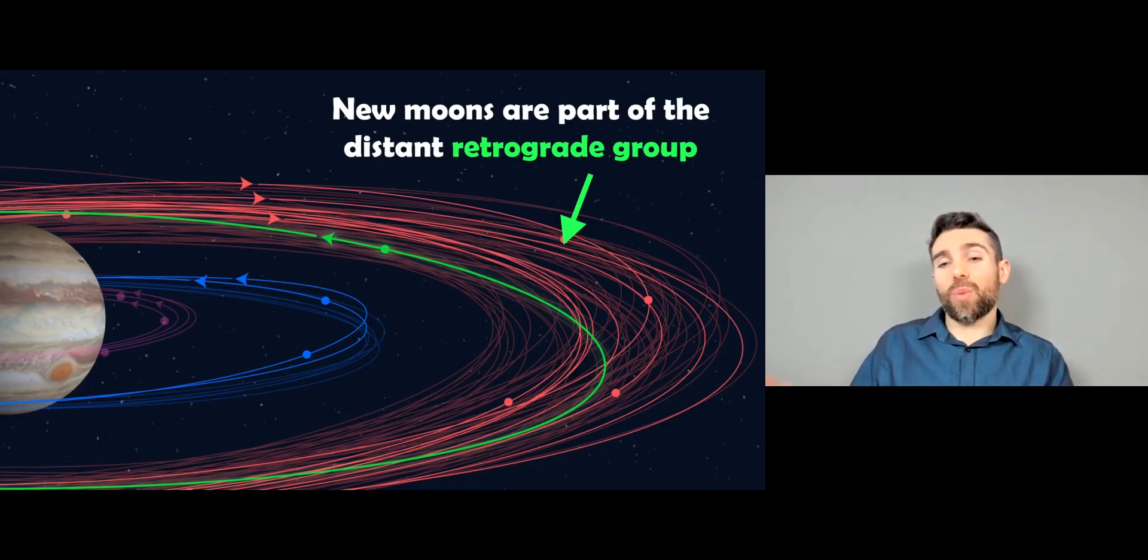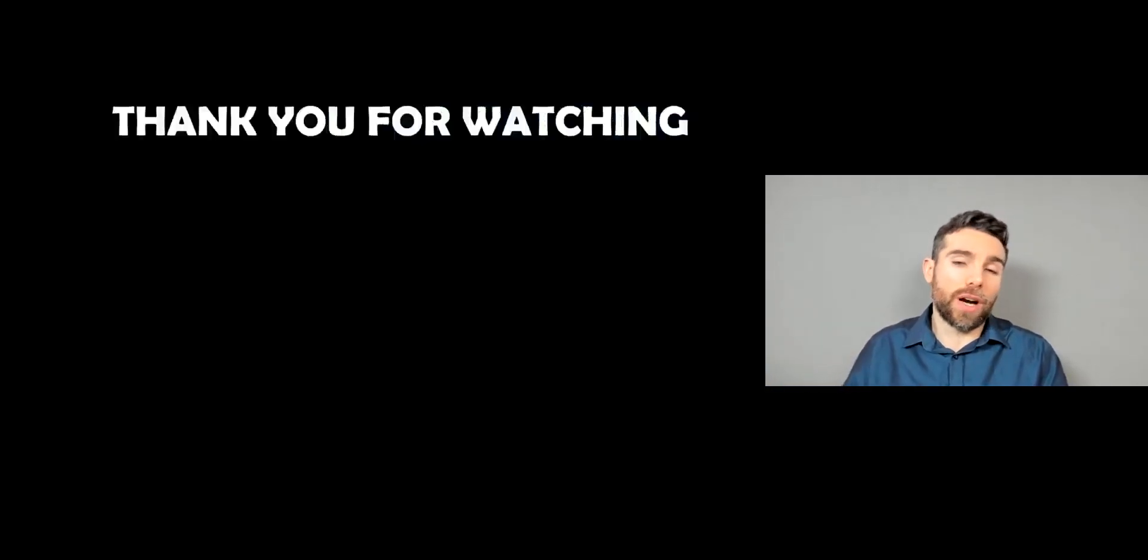Now what type were they? Well they were actually part of this distant retrograde group. So there's this group much further out, and these 12 new moons are part of that group. And they're going the wrong way round Jupiter, so they're in the retrograde group which is much further out.